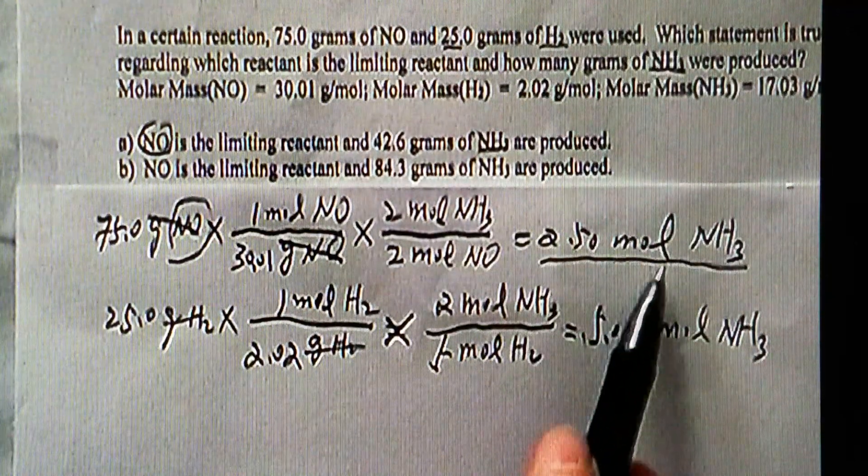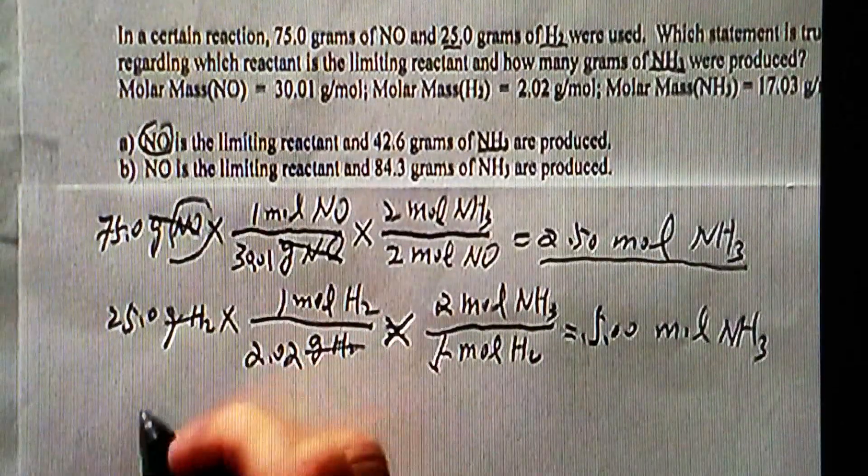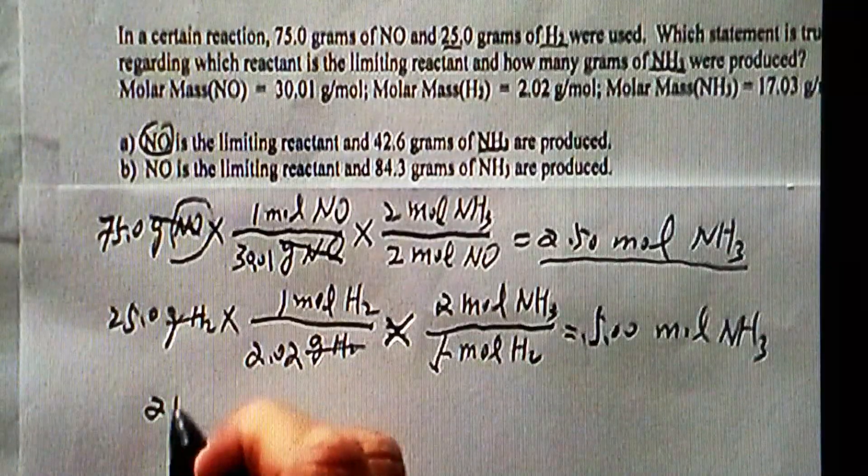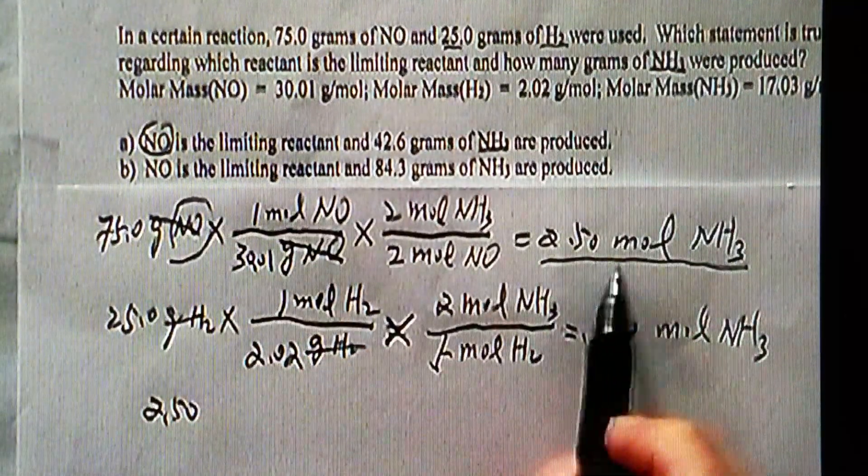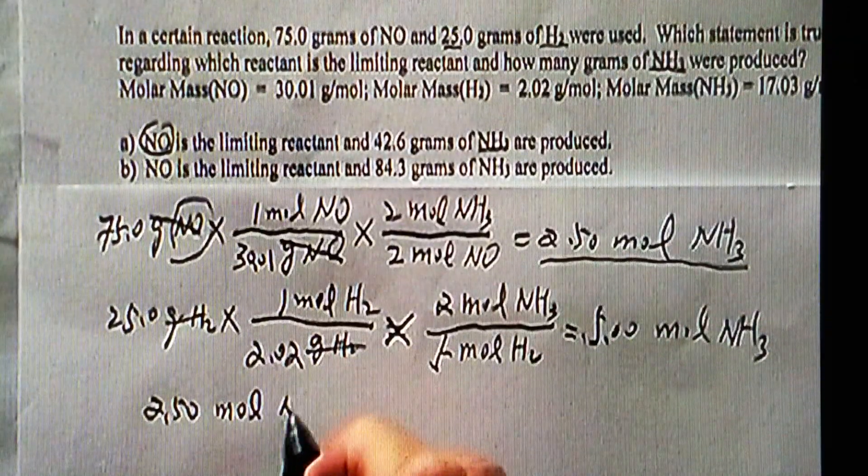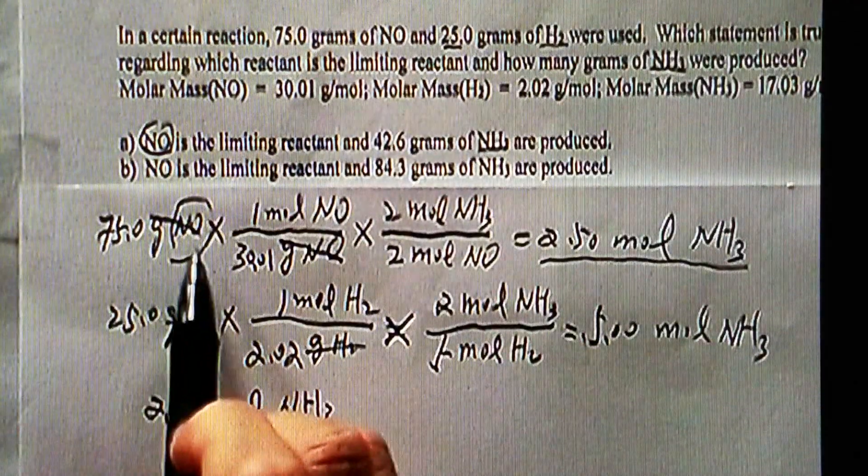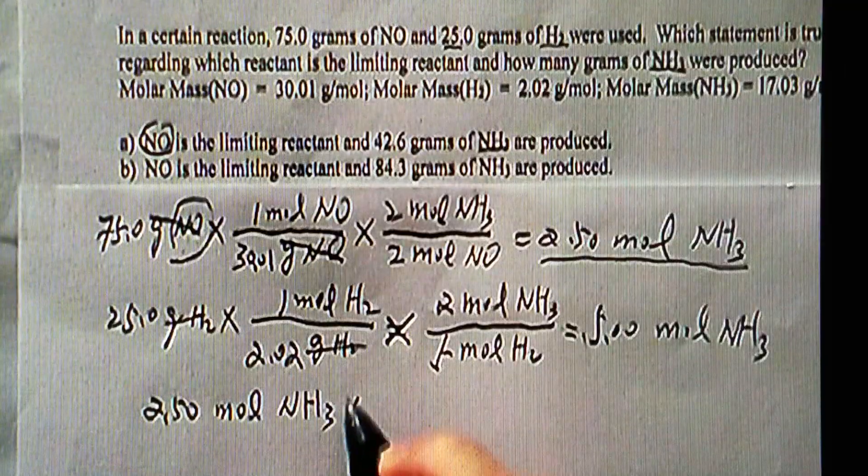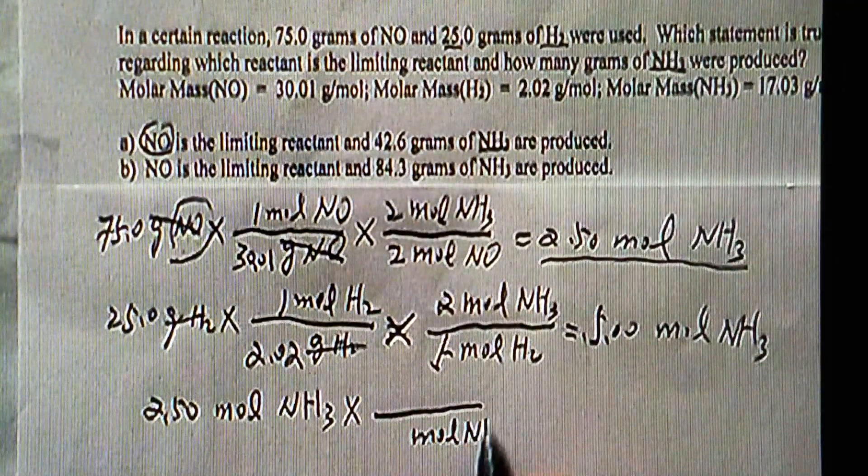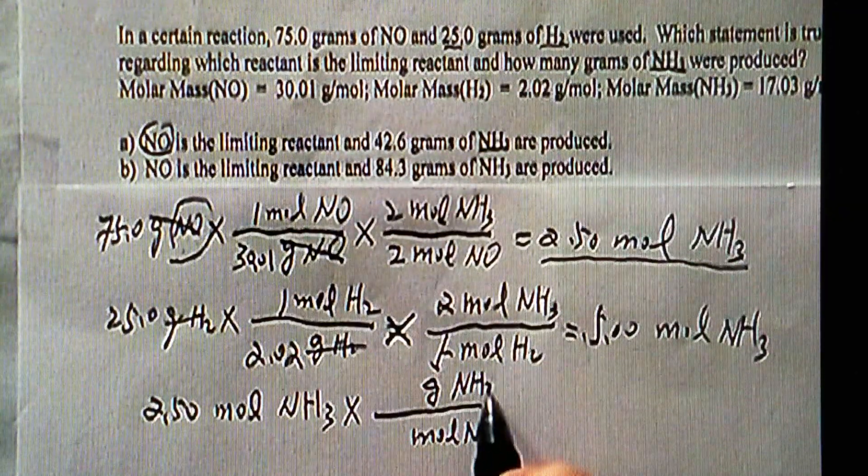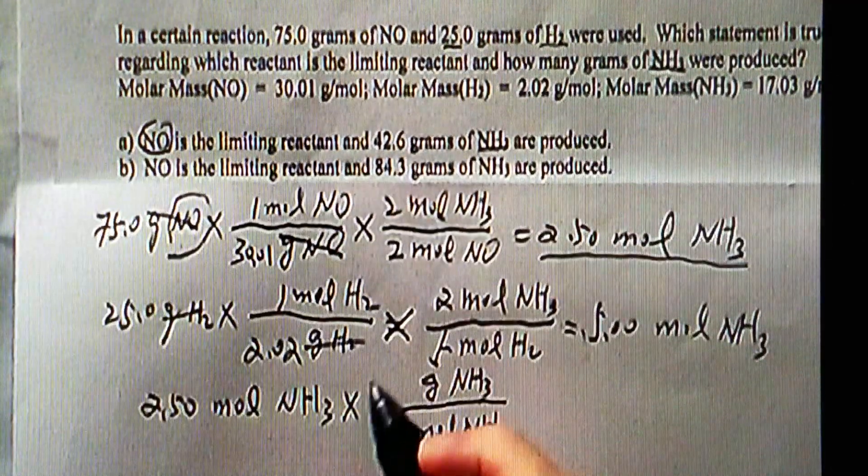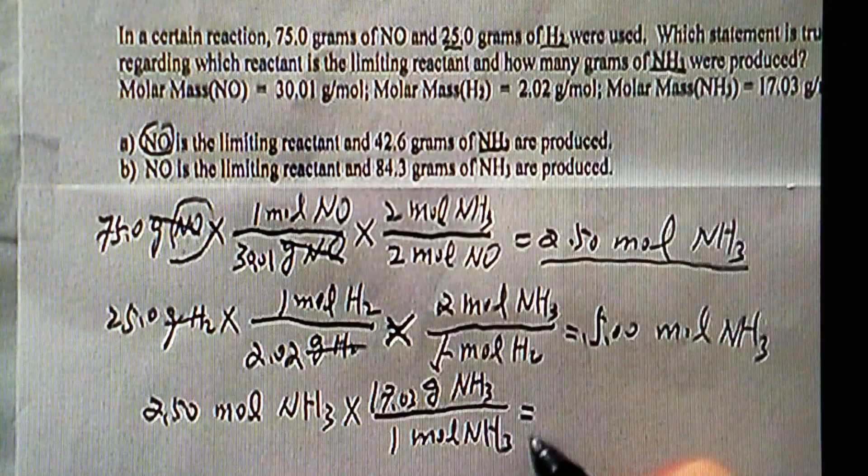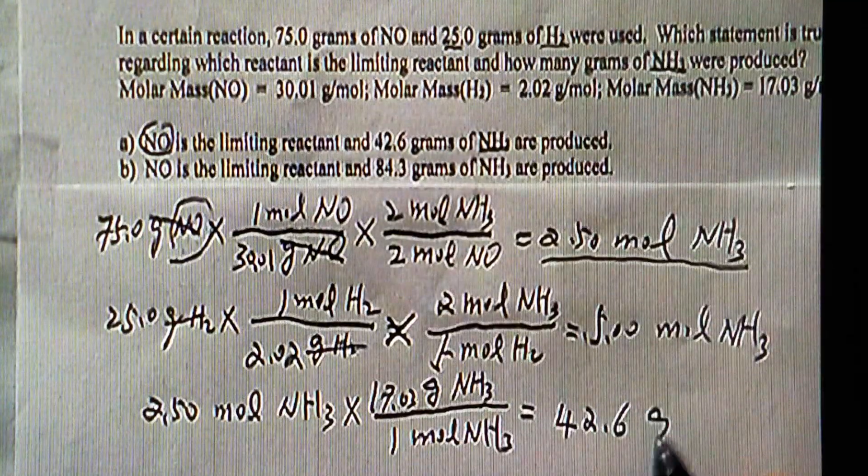If we convert this one to mass, the yield or how many grams of ammonia will be produced should be based on the limiting reactant value, which is 2.5 moles of ammonia produced by 75 grams of nitrogen monoxide. We convert from moles of ammonia to grams of ammonia using the molar mass of ammonia, 17.03. That should give me about 42.6 grams of ammonia.